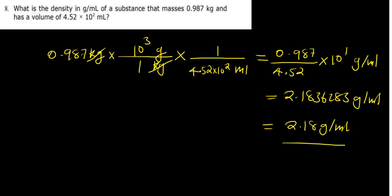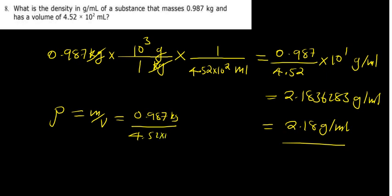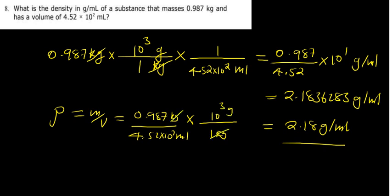You can also approach it directly using the density formula: density equals mass over volume. Take the mass of 0.987 kg divided by the volume of 4.52 times 10 to the power 2 milliliters. Since we want the answer in grams per milliliter, multiply the mass by 1000 grams per kg so that kg cancels. This gives essentially the same calculation as before, leading to the same answer.